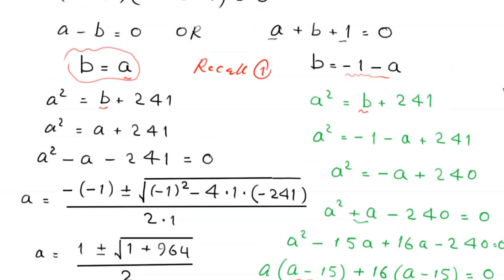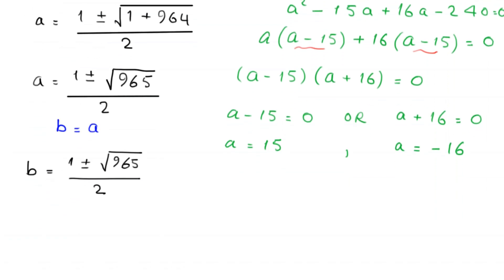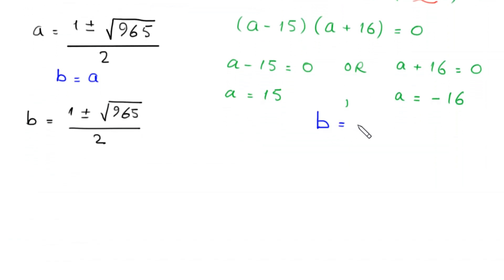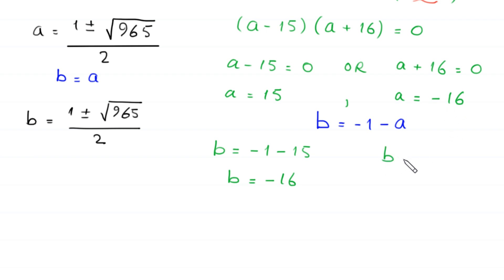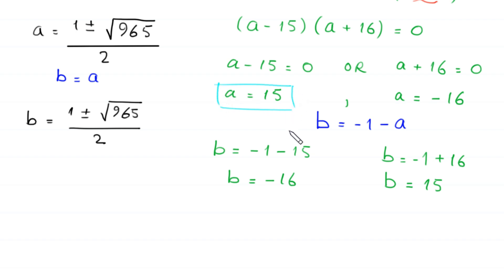To find the corresponding values of b, we use b equals negative 1 minus a. When a equals 15, b equals negative 1 minus 15 equals negative 16. When a equals negative 16, b equals negative 1 minus negative 16 equals 15.